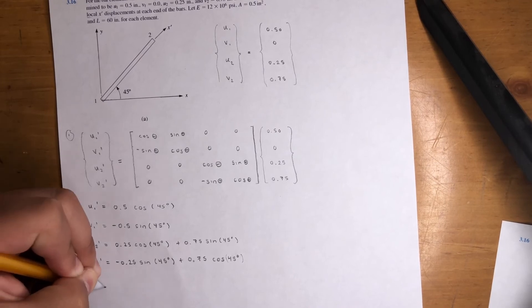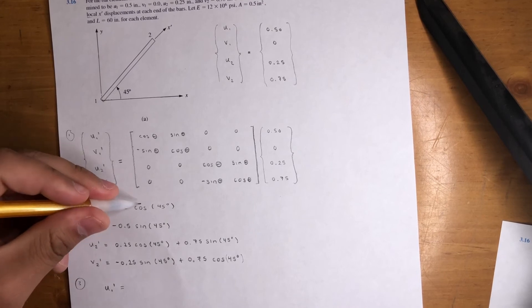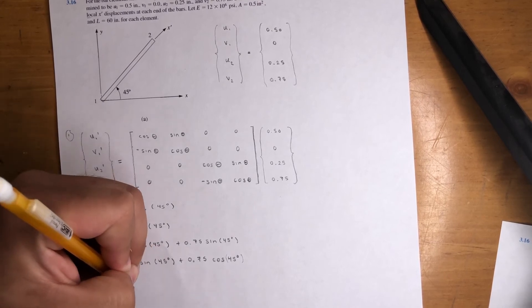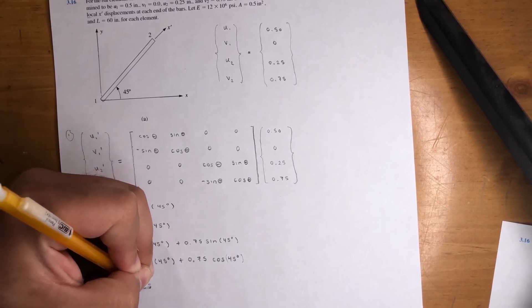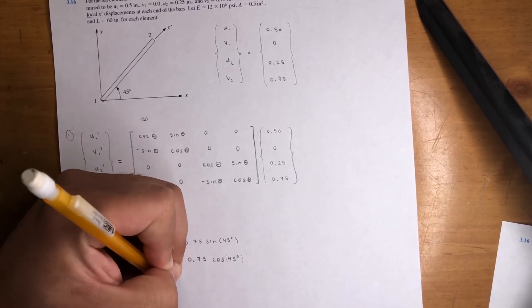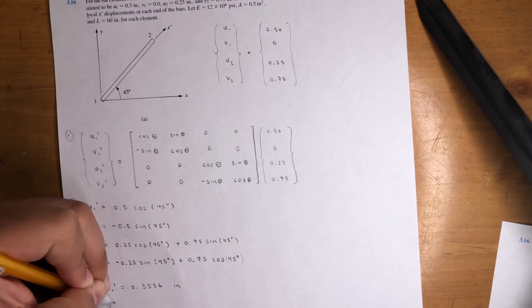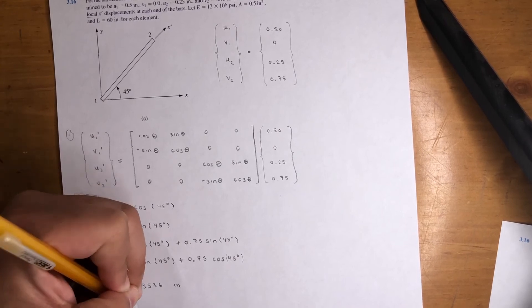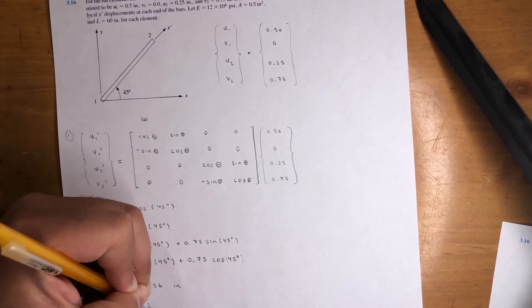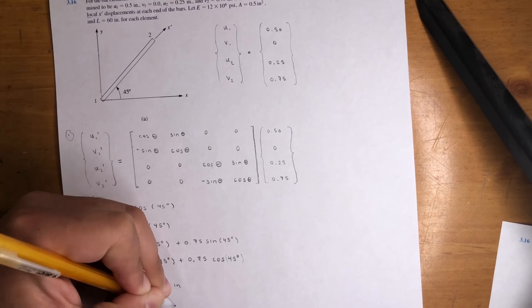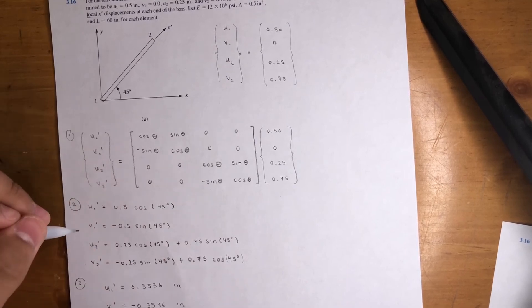Just do the math and you'll get U1 prime 0.5 times cosine 45. That should give you 0.3536. That is in inches. V1 prime is equal to negative 0.3536 inches. It is in inches. So this is, yeah, they're giving it in inches right here. So this is in inches.